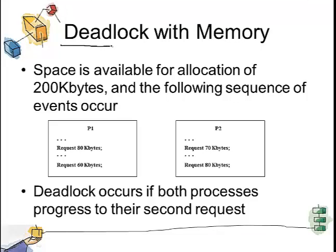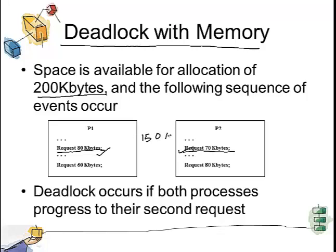Let us now study an example of deadlock with memory. The space available in memory is 200 KB. Process 1 requests 80 KB and Process 2 requests 70 KB, so a total of 150 KB has been occupied. If the processes move to a second step requesting 60 KB and 80 KB respectively, the request cannot be granted and deadlock occurs.